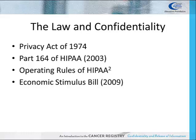One of the first federal laws to protect patient privacy was the Privacy Act of 1974. It allowed individuals to access records about them that are maintained by federal agencies. The federal agencies could also collect and release information about individuals.